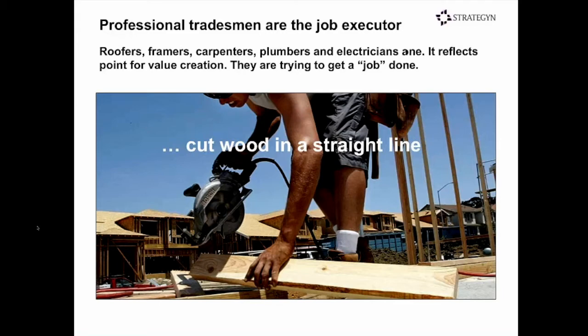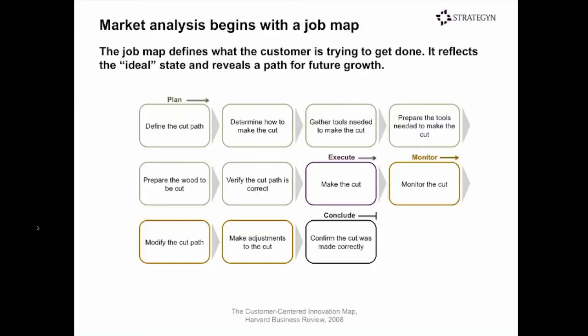The next part of the process is to begin analyzing the job. We conduct qualitative interviews with roofers, framers, electricians, plumbers, and so on to figure out the steps they go through to make the cut. The job map is not a process map or a customer journey map — it's a map that describes the job the customer is trying to get done. In many cases, they may not be getting the entire job done; they may be using workarounds or eliminating steps altogether.